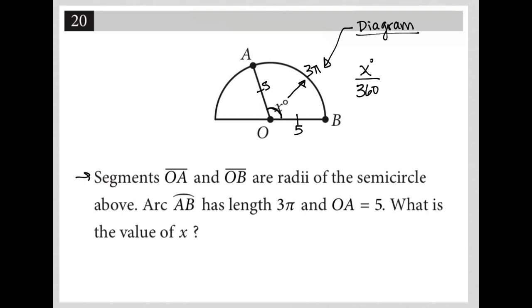So x degrees is some part. This x over 360 is really what we're dealing with here as a proportion. And this is going to be equal to the proportion that 3π represents of the entire circumference, 2πr.